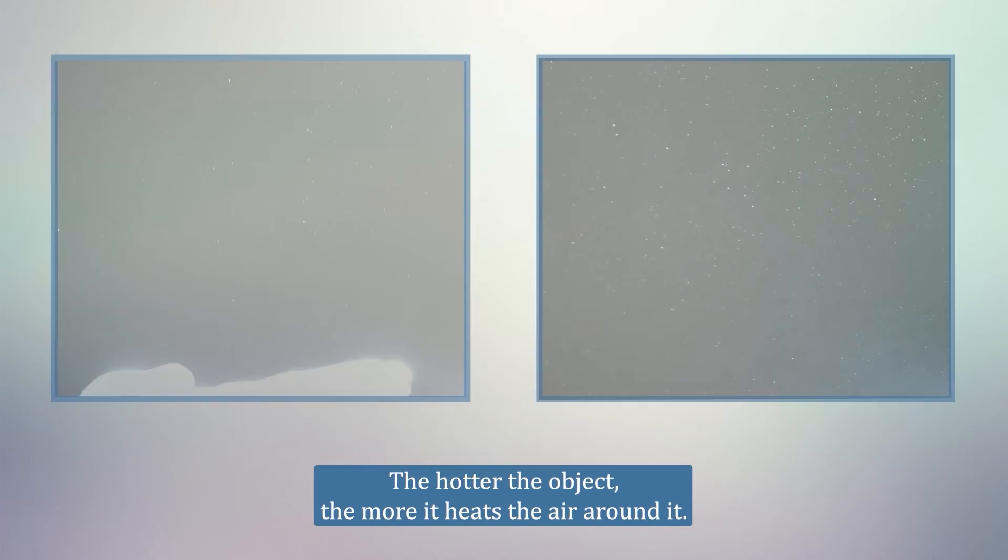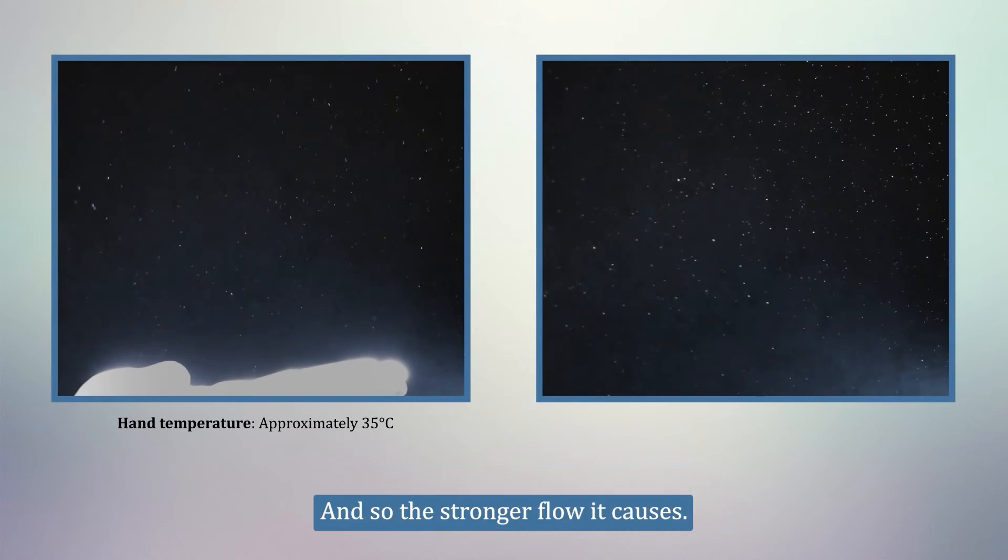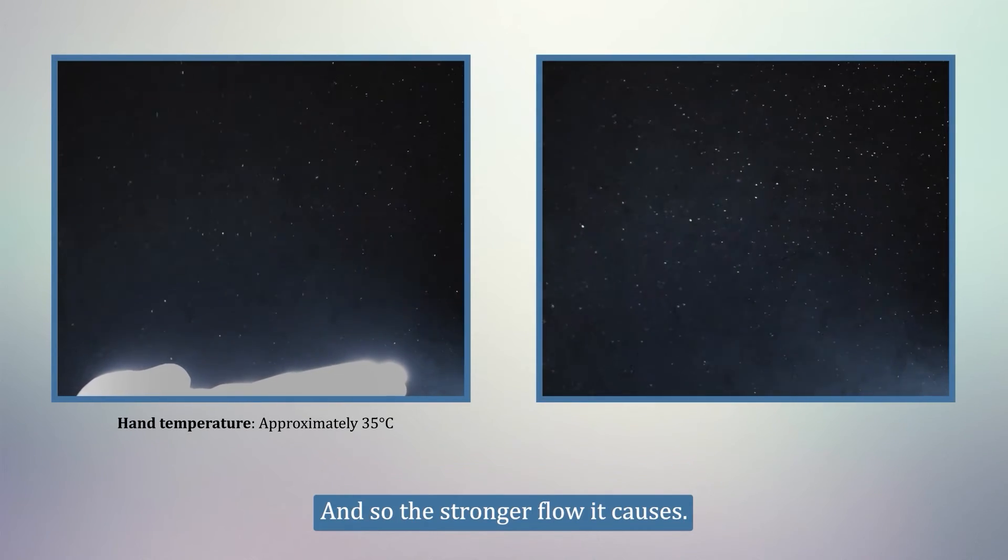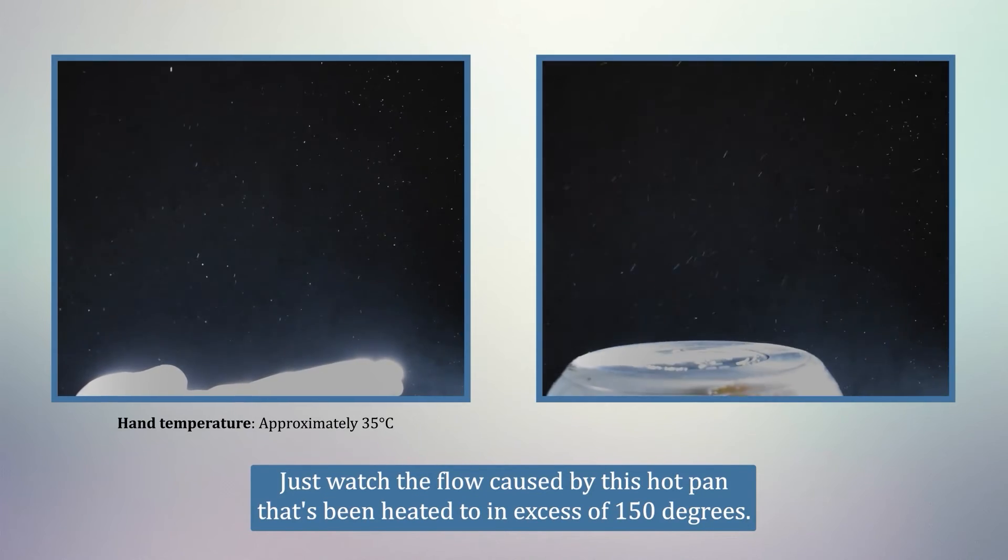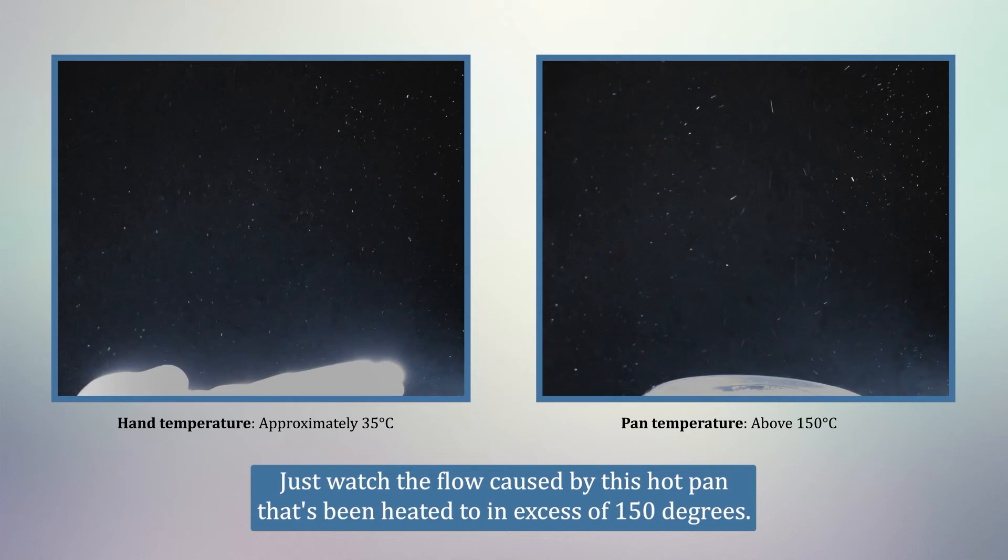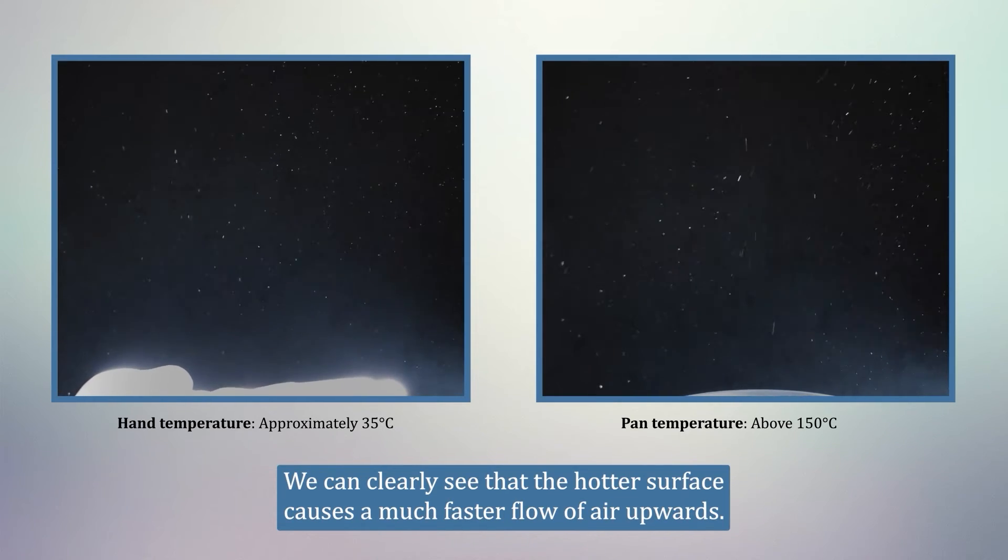The hotter the object, the more it heats the air around it, and so the stronger flow it causes. Just watch the flow caused by this hot pan that's been heated to an excess of 150 degrees. We can clearly see that the hotter surface causes a much faster flow of air upwards.